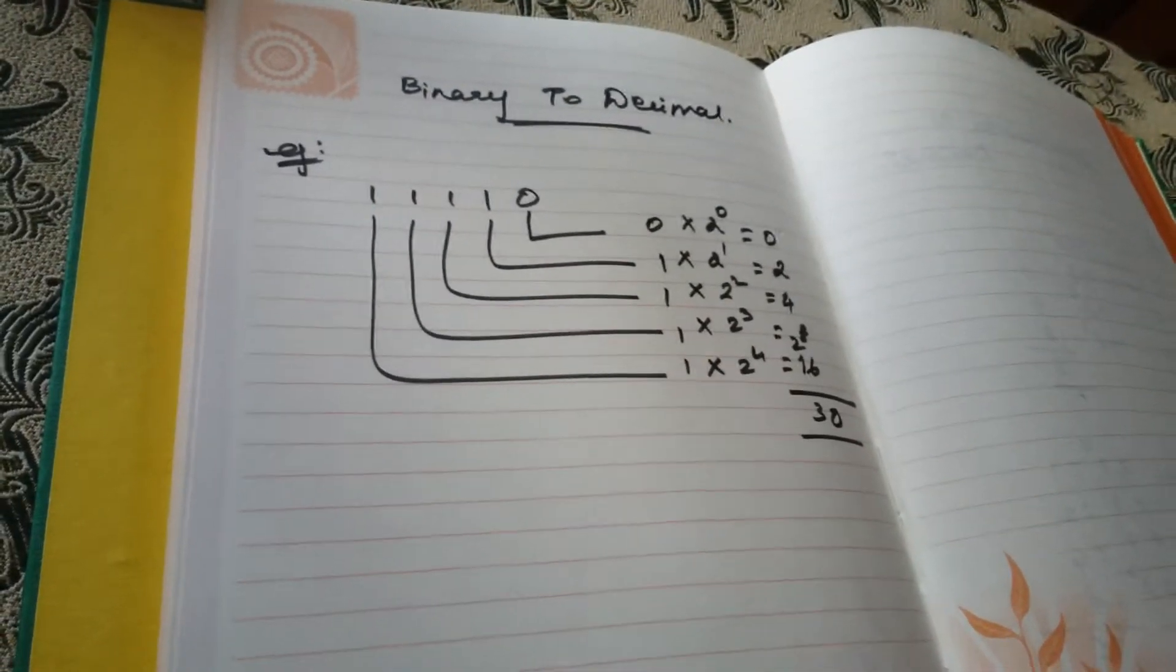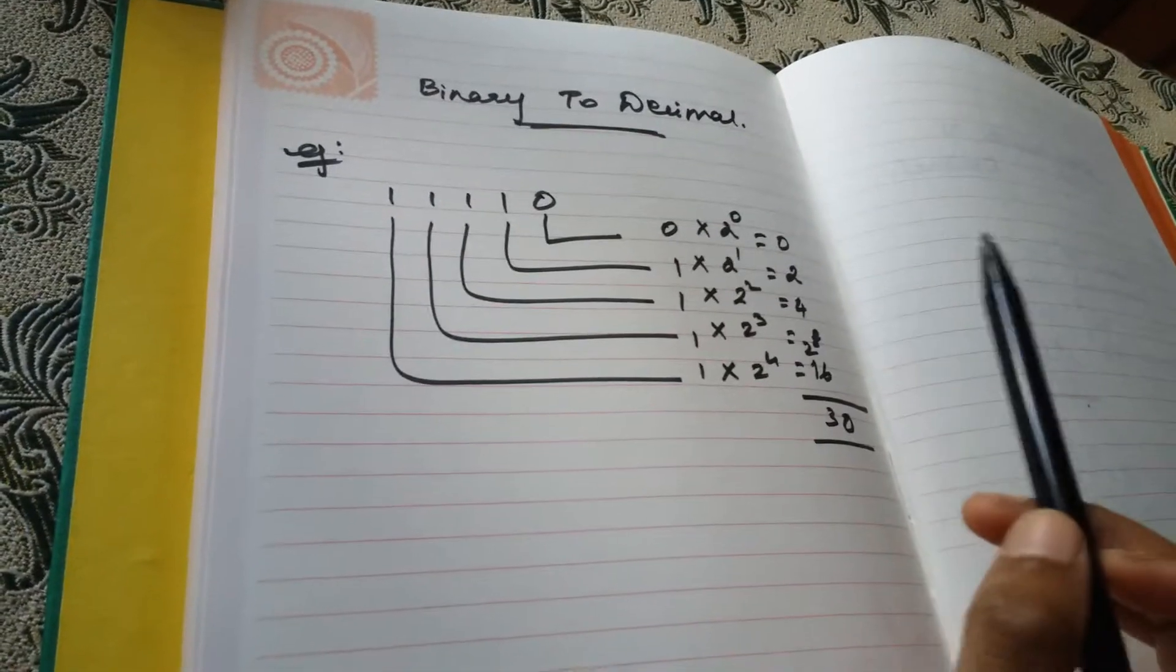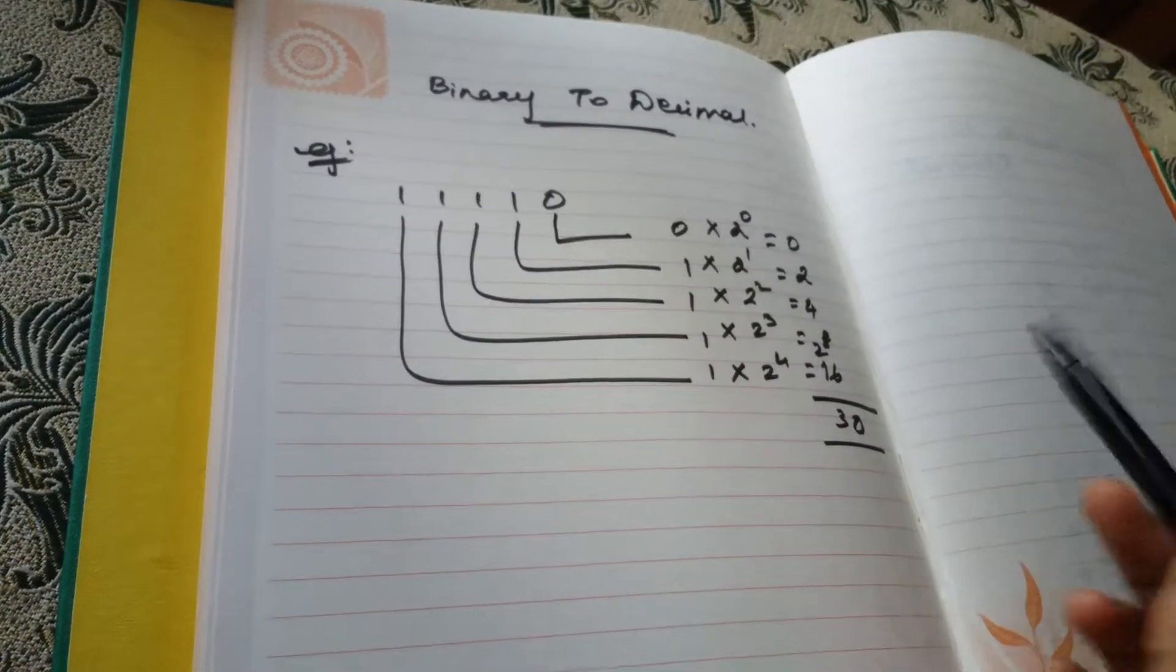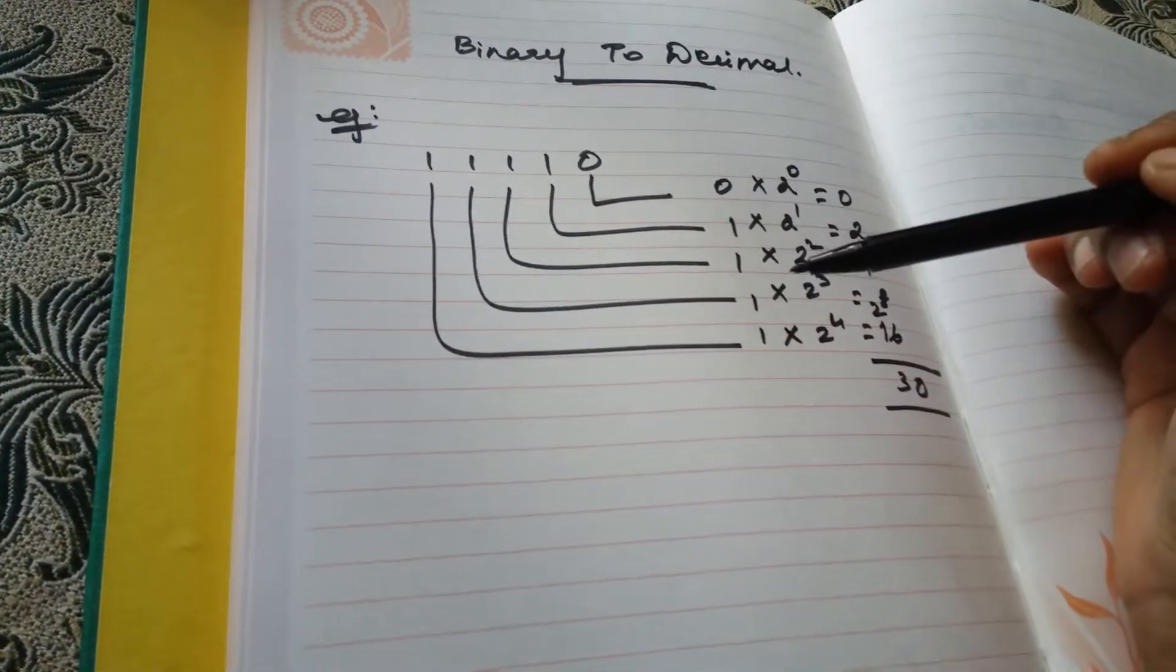Hello everyone, in this video we'll see how to convert a binary number to decimal. So as you all know, binary numbers always have zeros and ones. Now let's try converting binary to decimal. I have a worked out example.